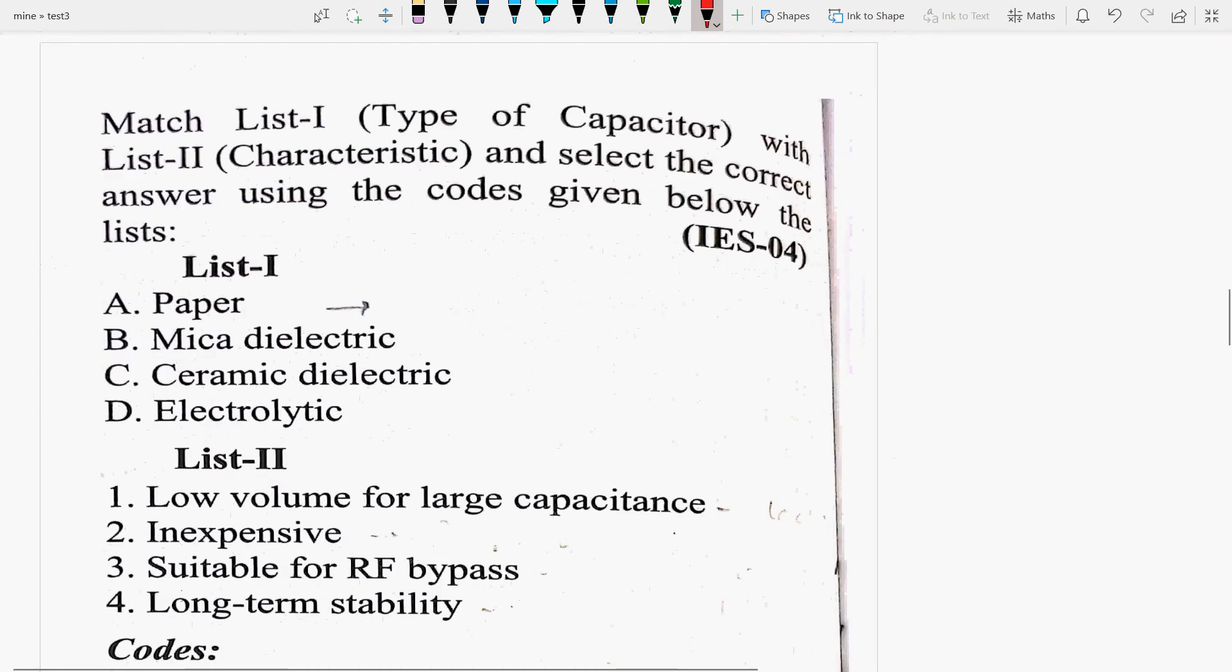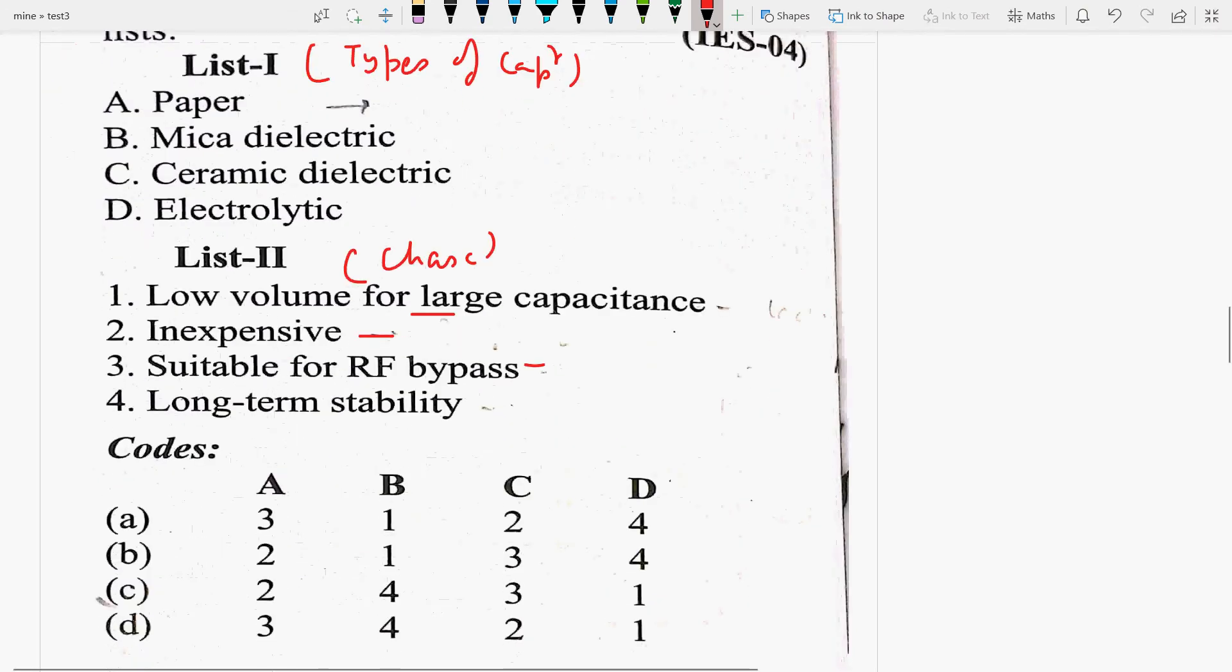Next question is match list 1, the type of capacitor with list 2 characteristic and select the correct option. Paper, mica dielectric, ceramic dielectric, electrolytic. This is your types of capacitor and list 2 is what? It is the characteristic. So, low volume is inexpensive, suitable for RF bypass is long term stability.